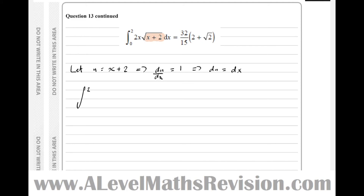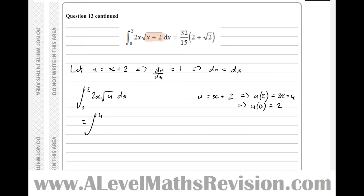The integral between 2 and 0 of 2x times root u times dx. Before changing dx to du, we must change the limits. If u equals x plus 2: when x is 2, u(2) equals 4; when x is 0, u(0) equals 2. So the integral becomes between 4 and 2. We write root u as u to the half and replace dx with du. Since u equals x plus 2, we get x equals u minus 2.